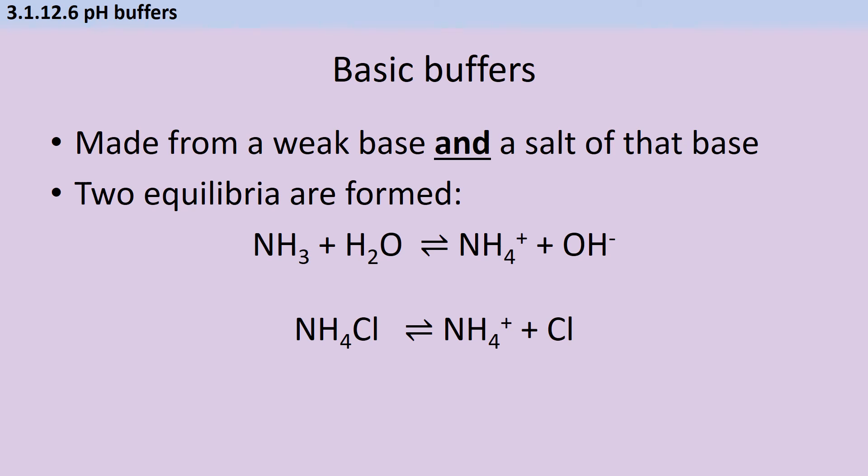If acid is added to this buffer, then the first equilibrium can shift to the right, providing a source of hydroxide ions which will neutralise those hydrogen ions to make water. The ammonium ions from the second equilibrium can react with any hydroxide ions added to turn back into ammonia and water. This will mitigate the pH change caused by adding a small amount of a strong base to this buffer.